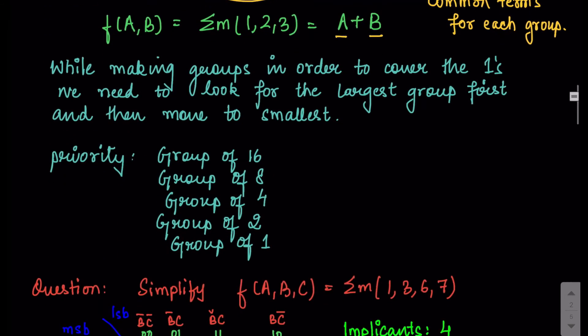While making groups to cover the ones, you look for the largest group first. The priority order is 16, then 8, 4, 2, and sometimes you may be left with a number that cannot form any group, in which case you consider it as an individual entity.